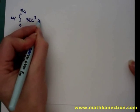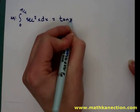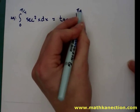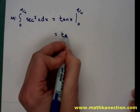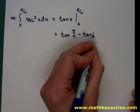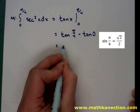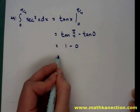For our next example, we're going to evaluate the integral from 0 to pi over 4 of secant squared x dx. The antiderivative of secant squared x is tangent of x. Using the first fundamental theorem of calculus, we get tangent of pi over 4 minus tangent of 0. Since sine and cosine of pi over 4 are both square root of 2 over 2, tangent of pi over 4 equals 1, and tangent of 0 is 0.